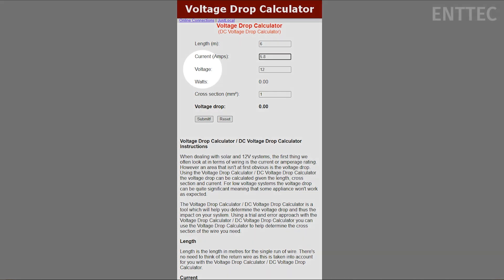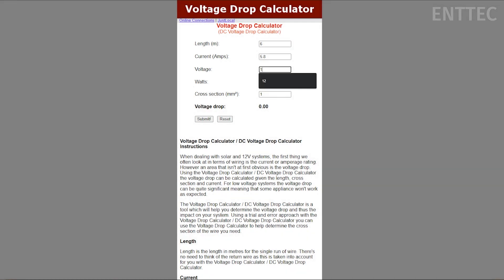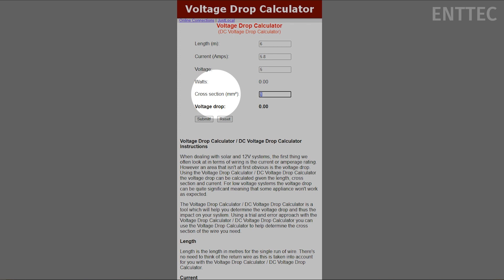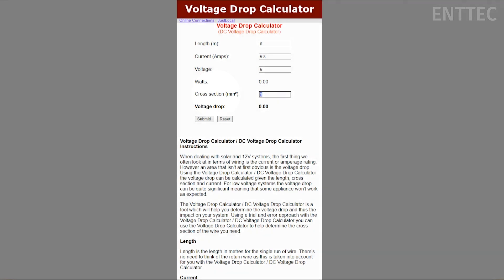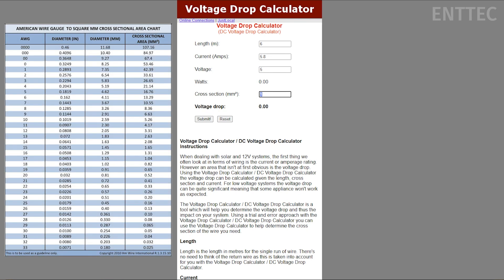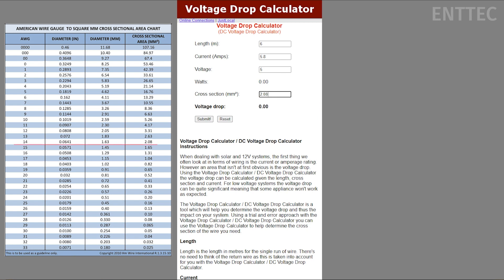Voltage. This is simply the voltage of the tape, which in this case is five volts as we are using our five volt 8P60-5-B tape. Cross section. This is the cross sectional area of our cable expressed in millimeters squared, also known as wire gauge. An AWG chart will come in handy here as it lists all the standard wire gauges and their equivalent metric cross sectional areas. In this case we're using 14 AWG which has a cross section of 2.08 millimeters squared.